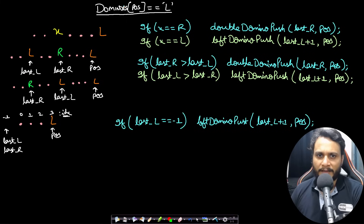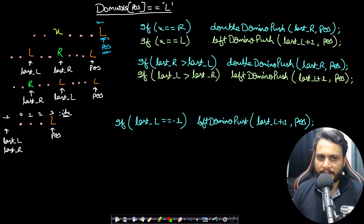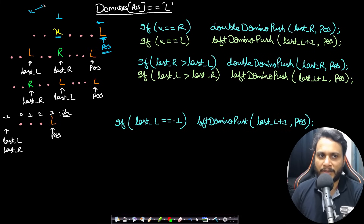Now let's look at the important cases. For any position in the domino string it can be either 'L', 'R', or '.'. Let's cover all cases when a domino is to be pushed to the left. If we are looking at an 'L', we check the nearest domino to the left where a force is applied — call it X. Since a force has been applied there, X can be either 'L' or 'R'.